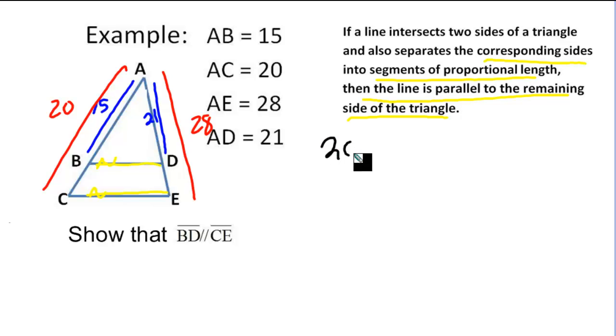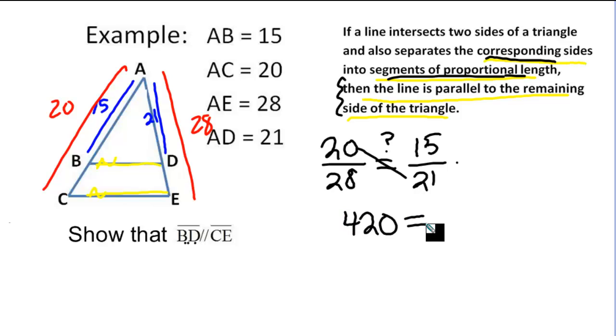In this triangle, the red side 20 corresponds with the red side 28. I'm hoping that that ratio holds true with the blue sides. The blue side of 15 on the left corresponds with the blue side of 21 on the right. If I want this to be true, I want my cross products to be equal, then I've shown that this is a true statement. And by showing this is true, I've then shown this is true, which is what I am supposed to do. So let's check the cross products. 20 times 21 is 420. And 28 times 15 is also 420. Therefore, I can say BD is parallel to CE.